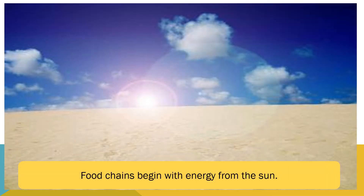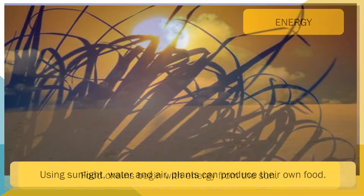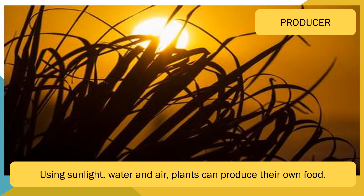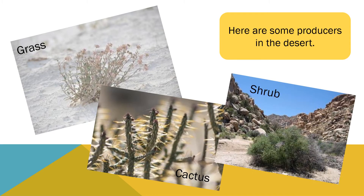Food chains begin with energy from the sun. Using sunlight, water and air, plants can produce their own food. Plants are known as producers. Grass, cactus and shrubs are all plants which grow in the desert. All of these plants use energy from the sun to produce their own food. They are all producers.